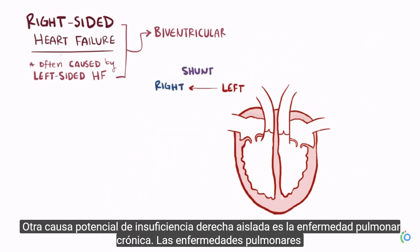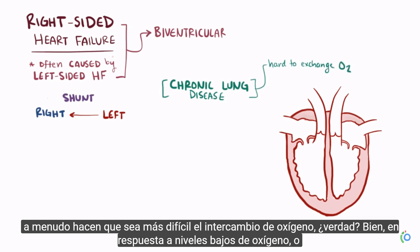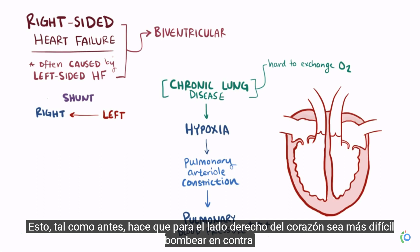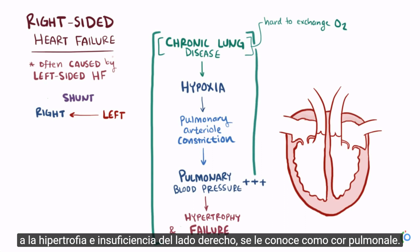Another potential cause of isolated right-sided failure is chronic lung disease. Lung diseases make it hard to exchange oxygen, and in response to low oxygen levels, or hypoxia, the pulmonary arterioles constrict, raising pulmonary blood pressure. This makes it harder for the right side of the heart to pump against and can lead to right-sided hypertrophy and heart failure. When chronic lung disease leads to right-sided hypertrophy and failure, it's known as cor pulmonale.